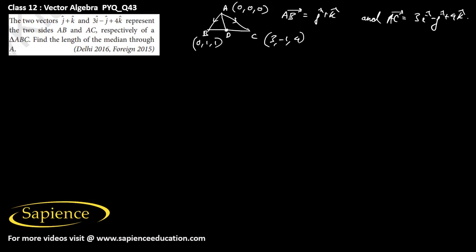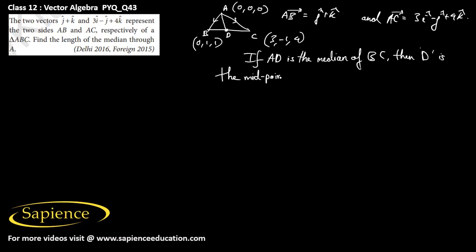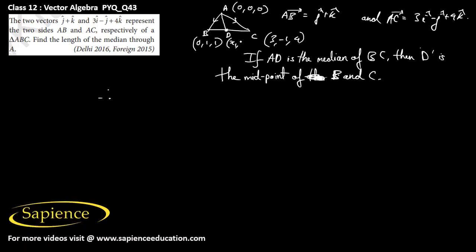The median is AD on side BC from point A, so D should be the midpoint of BC. If AD is the median on side BC, then D is the midpoint of B and C. Let us take the point D as (x1, y1, z1).